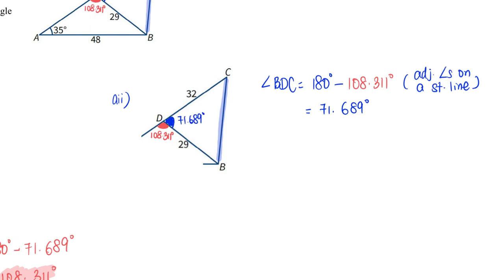Once I know this is 71.689 degrees, what rule should I use now that I have this angle, this side, and this side? Yes, cosine rule.